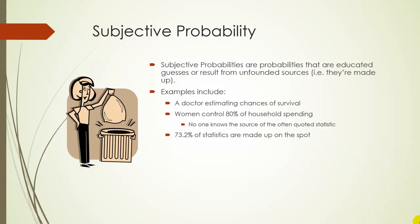And then my favorite example: seventy three point two percent of statistics are made up on the spot. Okay, that was my attempt at a bad joke. This is actually an old statistics joke, but it's an example of a subjective probability because I actually made up that seventy three point two percent. That's the joke.